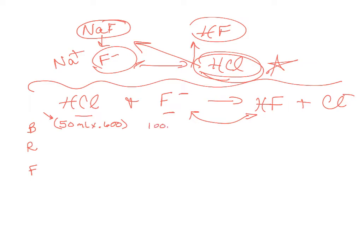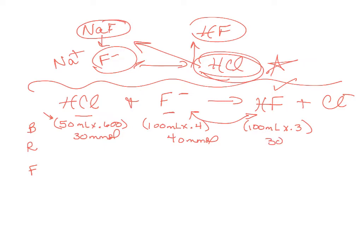For fluoride: 100 milliliters of 0.4 molar. For hydrogen fluoride — don't forget it's not zero for products because your buffer had HF to begin with: 100 milliliters of 0.3 molar. HCl: 50 milliliters of 0.6 molar. So initial moles are 30 millimoles contaminant acid, 40 millimoles conjugate base, and 30 millimoles hydrogen fluoride.